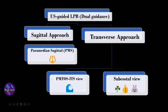These are the sonographic patterns you need to remember while scanning for the ultrasound-guided lumbar plexus. The trident sign is associated with the paramedian sagittal, the wave sign with the PMTOS, and the shamrock thumbs-up or bunny head sign with the subcostal view.